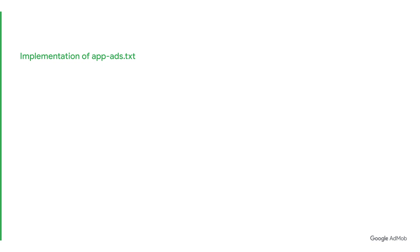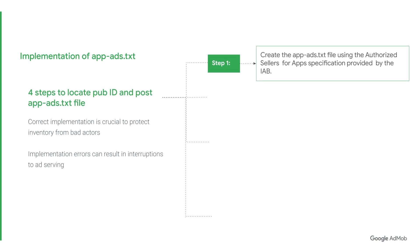Now, how can publishers implement Apex.txt? All you need to do is create an Apex.txt file and publish it to the developer website you've used in your App Store listing. Before we dive into the step-by-step instructions, note that it is crucial to implement the standard correctly, as errors could interrupt ad serving.